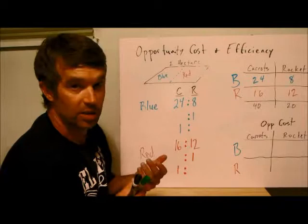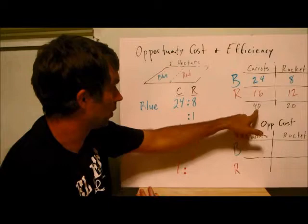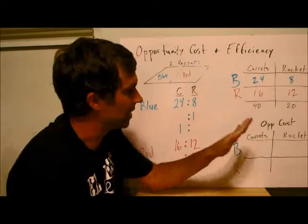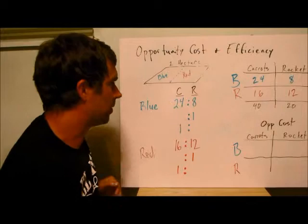Now is where we start to look at our PPC and it becomes much more important calculating our opportunity cost. Because just calculating the opportunity cost like we did before, where one carrot was worth half a rocket, it's kind of like, well, so what? It doesn't really matter. But now, since these two are different, we can say, okay, well, which one is better at which, and where should we focus each one's abilities.